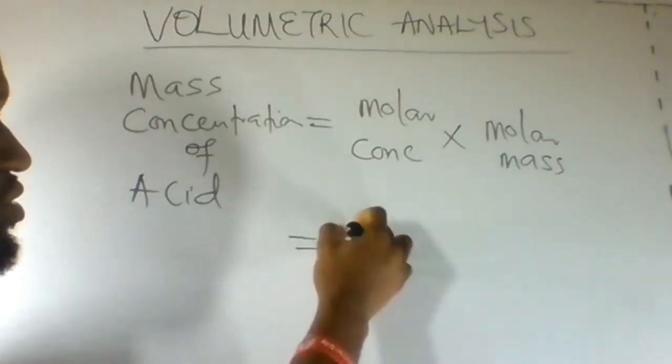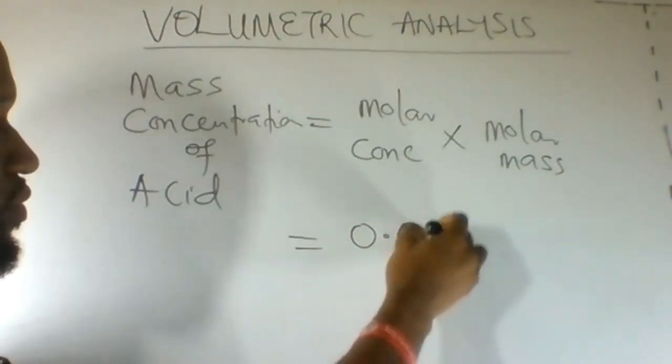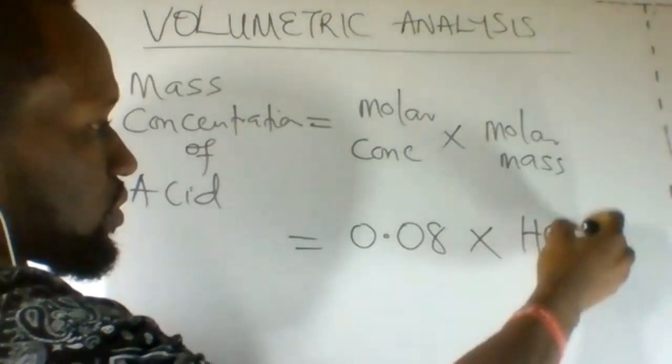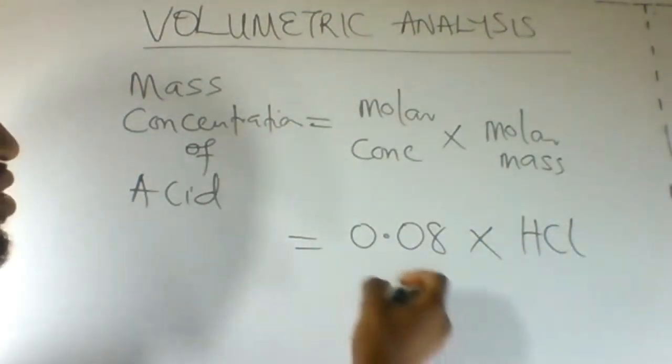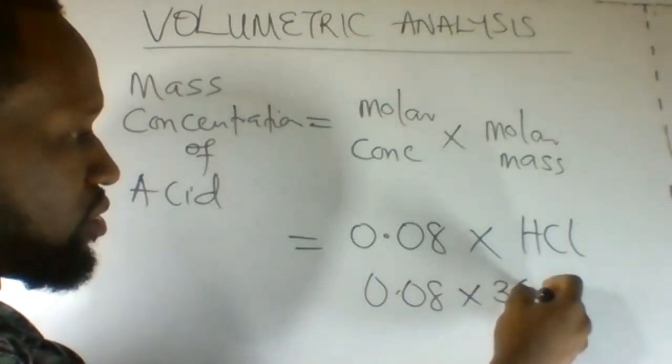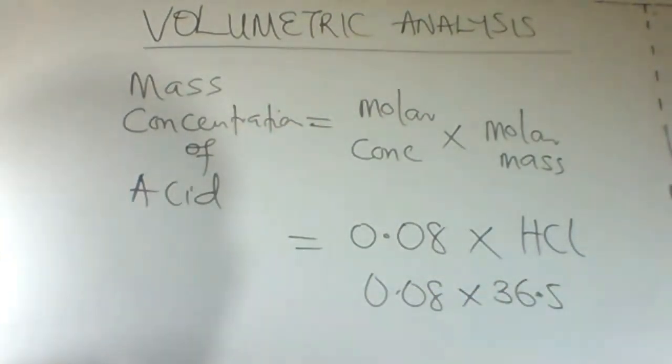Our molar concentration is 0.08. Our acid is HCl. HCl is 36.5. So 0.08 times 36.5.